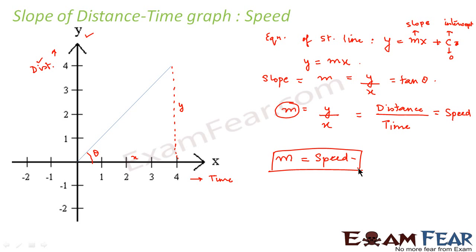To do a quick review: we plot a distance-time graph, and if it comes out to be a straight line, then the slope of this line is equal to the speed of the particle.